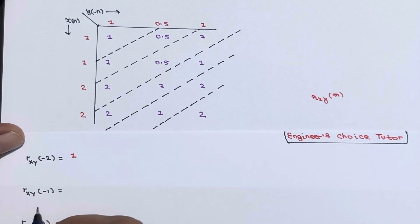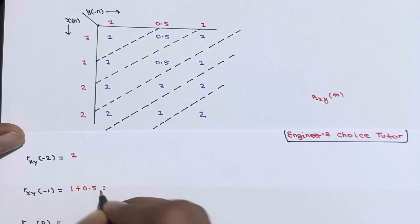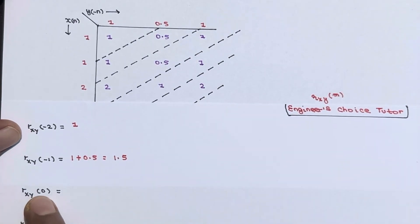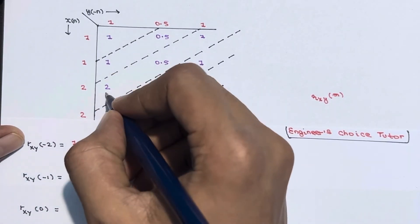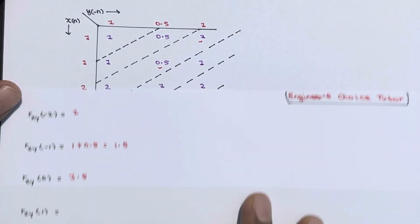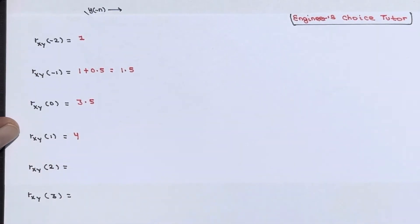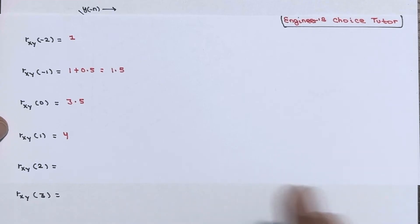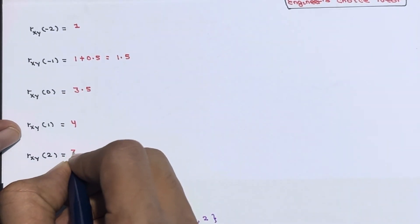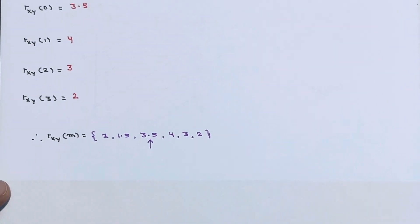Next, r_xy(-1) = 1 + 0.5 = 1.5. Then r_xy(0) = 2 + 0.5 + 1 = 3.5. Next, r_xy(1) = 2 + 1 + 1 = 4. Then r_xy(2) = 1 + 2 = 3. And the last value r_xy(3) = 2. That is the complete cross-correlation sequence computed using the matrix method.